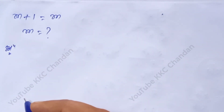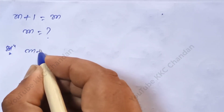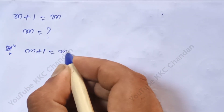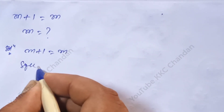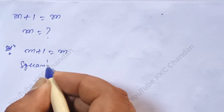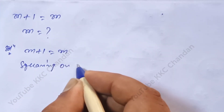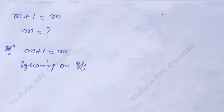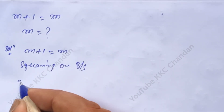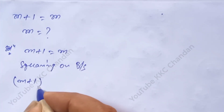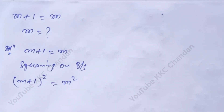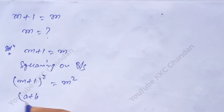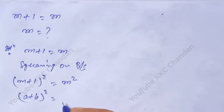According to the question, √(m + 1) is equal to √m. Squaring on both sides: m plus 1 whole square is equal to m square.